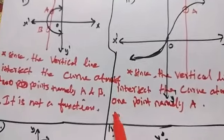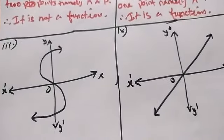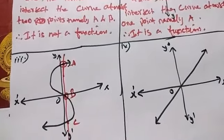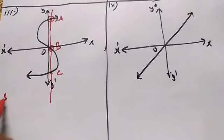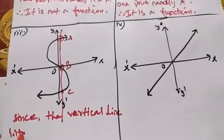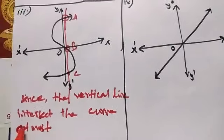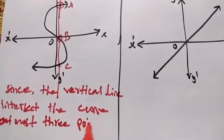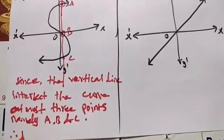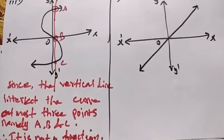namely point a, therefore it is a function. For the third curve, the vertical line intercepts points a, b, and c. Since the vertical line intersects the curve at most three points,